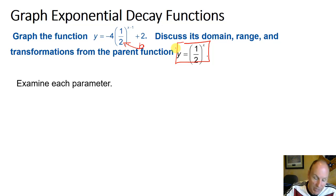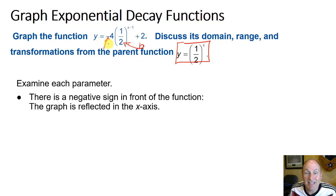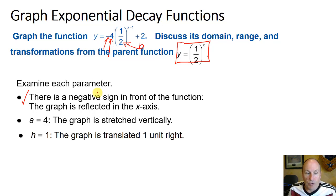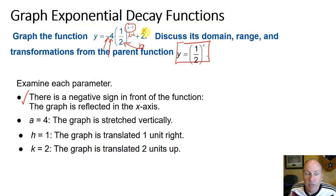We've got to break it apart piece by piece. There's a negative sign in front of the function, so that's going to reflect it about the x-axis. The 4 value of a means that the graph is going to stretch vertically by a factor of 4. An h value of positive 1 means the graph is going to be shifted 1 unit to the right. And a k value of positive 2 means the whole graph is going to be translated 2 units up. So from 1 half to the x to this thing, we're going to see quite a bit of difference.